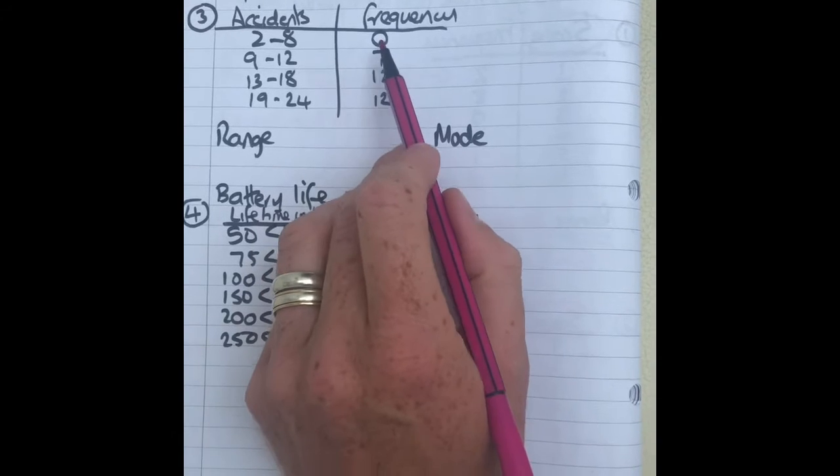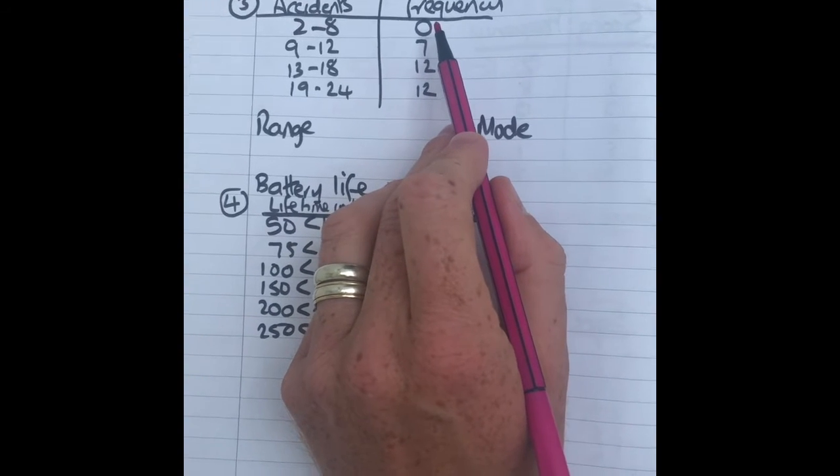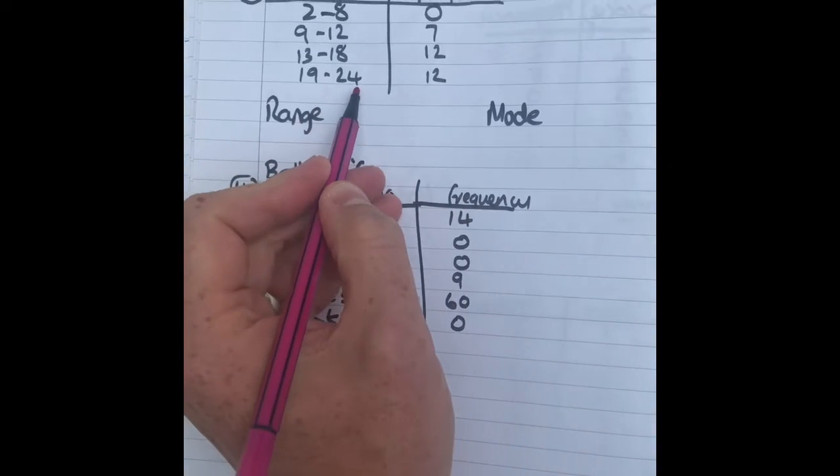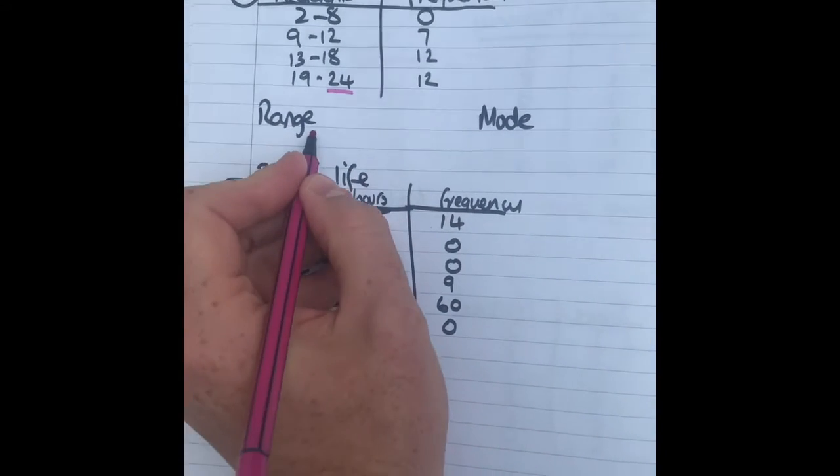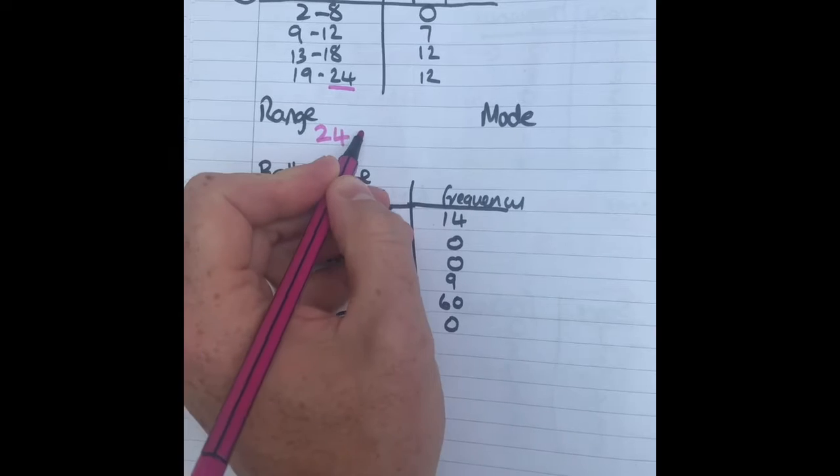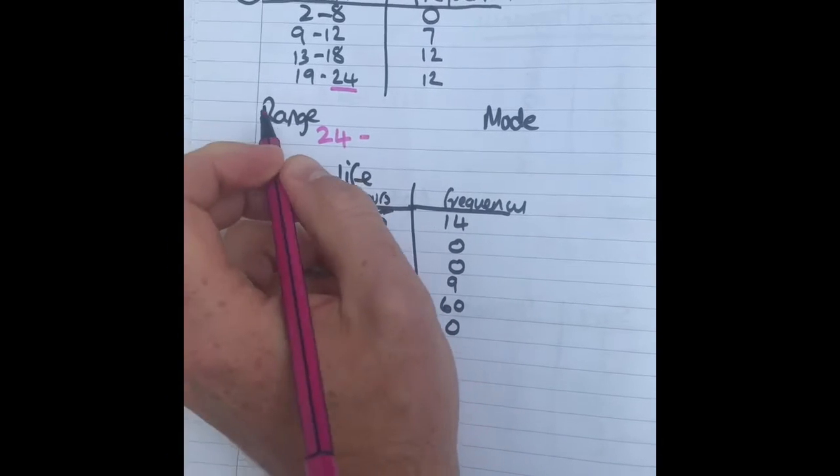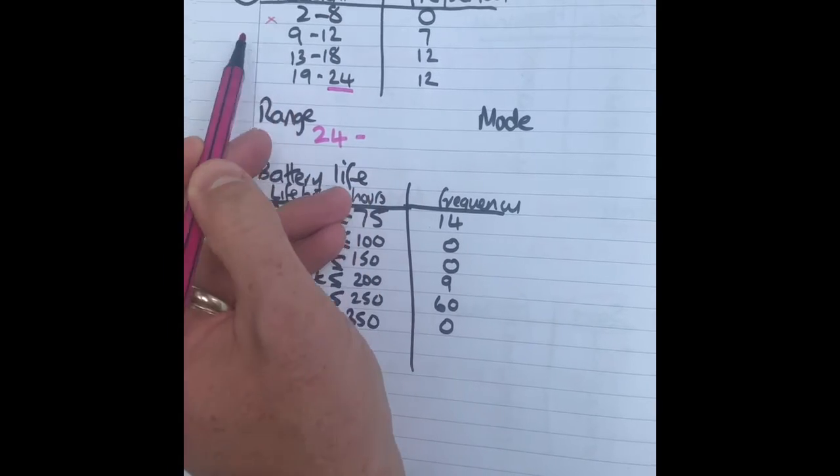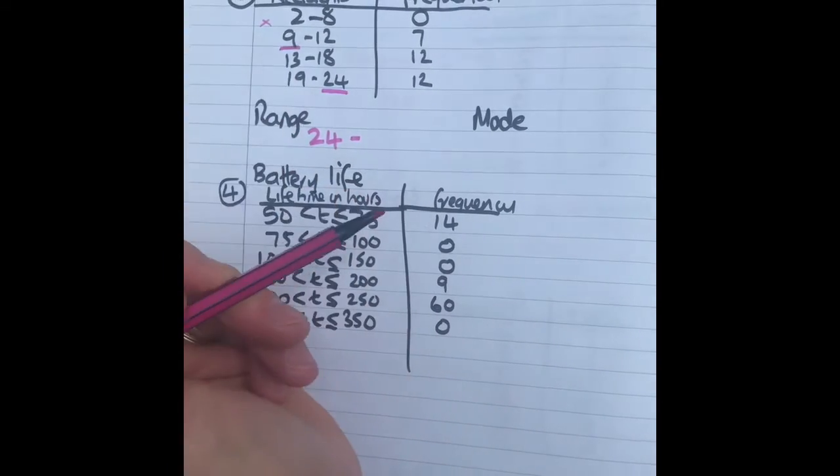Range again follows the same pattern. This one's not got any, then there's 12 here. So the highest number it could have been is 24. So that's the maximum or the highest value. What's the lowest value it could have been? Well there's nothing in this one, so the lowest it could be was 9.